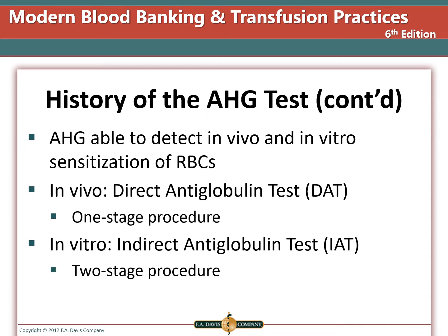AHG is able to detect both in vivo and in vitro sensitization of red blood cells. In vivo means that it occurred within the body — antibodies have attached to red cells inside the body, such as transfused blood that gets coated in patient antibody. This can also occur in newborn infants if the mother has made antibodies that cross the placenta and attach to the baby's cells. In vitro means we will be attaching the antibodies to the cells in the laboratory test tube. We can also use this method to detect antigens using reagent antibodies.